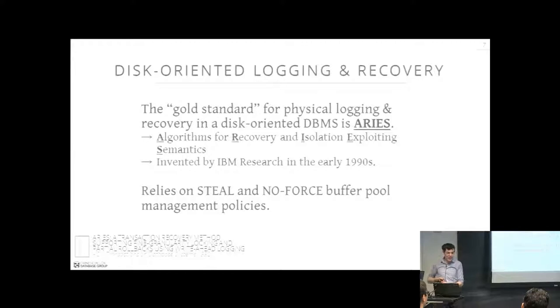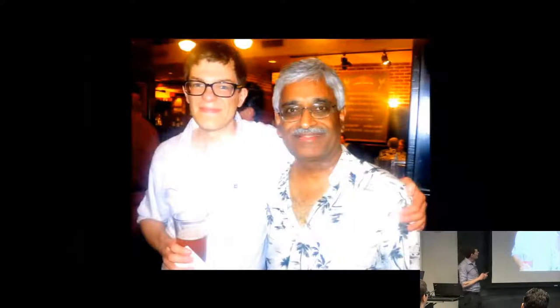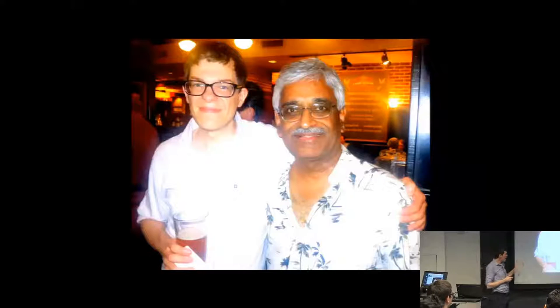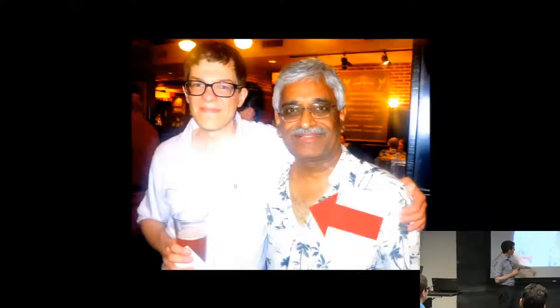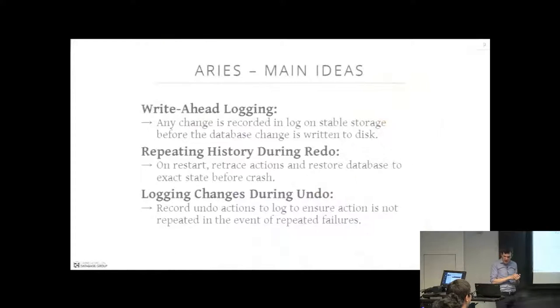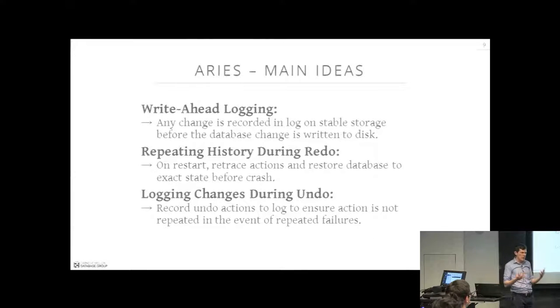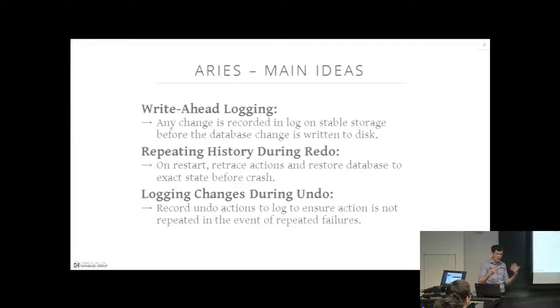I'm going to give you a high-level overview of what ARIES actually does, so you can see why we want an in-memory-optimized version. The main ideas are: write-ahead logging to store all modifications in log records, and when a transaction commits we flush all corresponding log records to disk before acknowledging the client. On recovery, we replay the log to redo changes made before the crash, and then undo changes from transactions that hadn't committed.